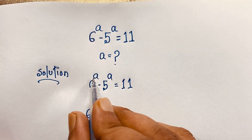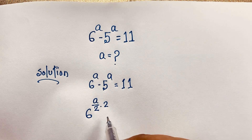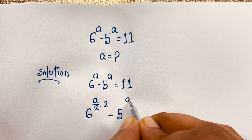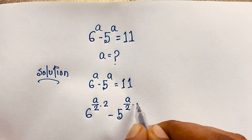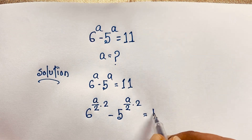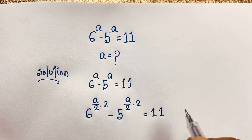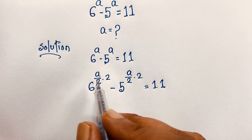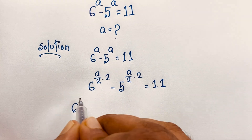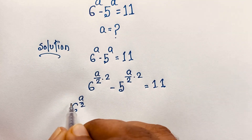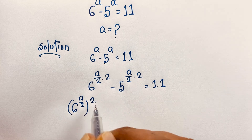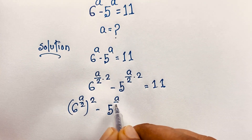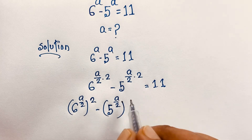The 2s cancel out and we get back 6 to the power a. Same case for 5 to the power a over 2, times 2, is equal to 11. According to the exponential formula, this expression becomes 6 to the power (a over 2), whole squared, minus 5 to the power (a over 2), whole squared, is equal to 11.